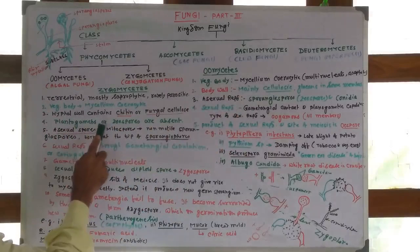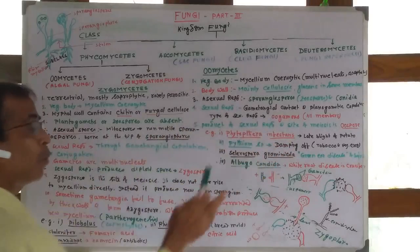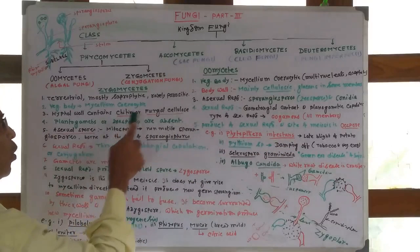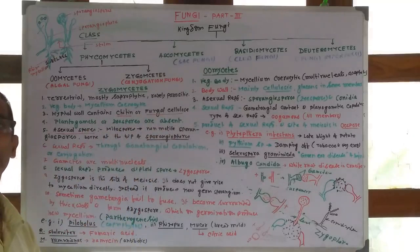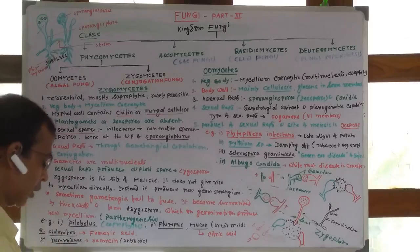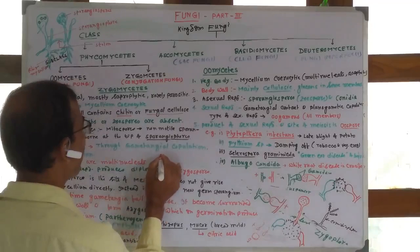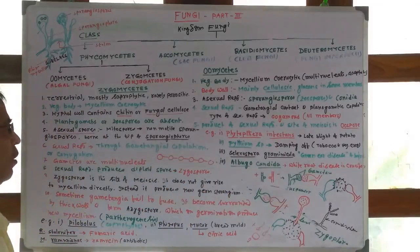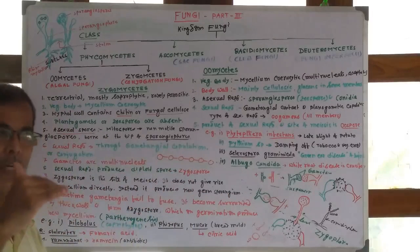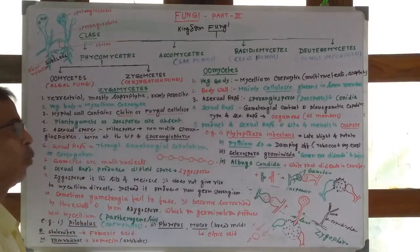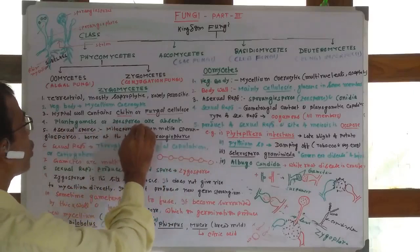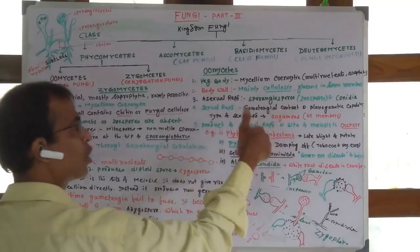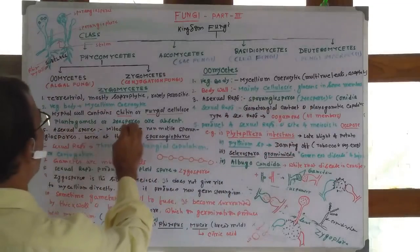The hyphal wall contains chitin and fungal cellulose. Chitin is a homopolymer of N-acetyl glucosamine, an amino sugar connected by beta-1,3-glycosidic bonds. Planogametes or zoospores are absent - asexual spores are non-motile, meaning they are immotile.